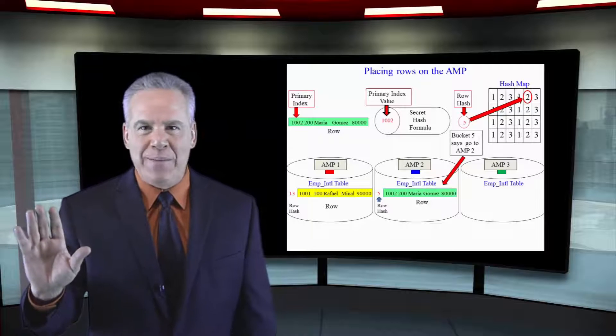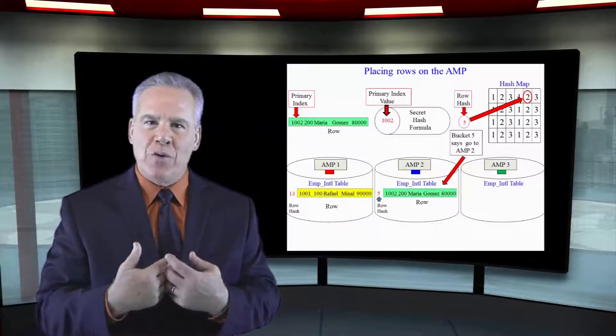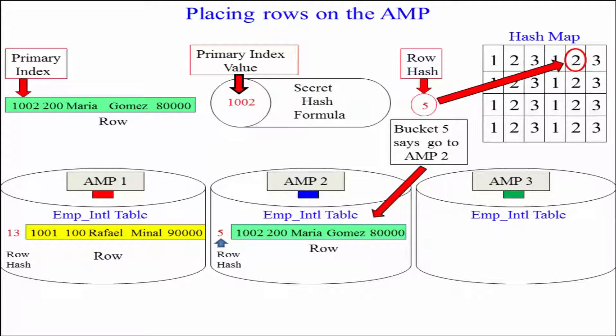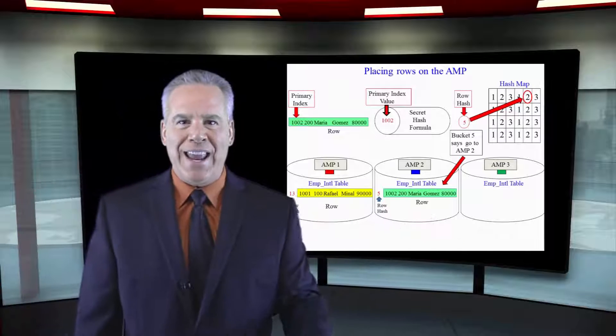Every row in every table is hashed. Hey, what's the second row of this table? Well, it's Maria Gomez. 1002 is the primary index. Hash it. The row hashes a 5. Count over 5 buckets. That says to go to amp 2. Take the 5 with you, Maria, and put that on amp 2.